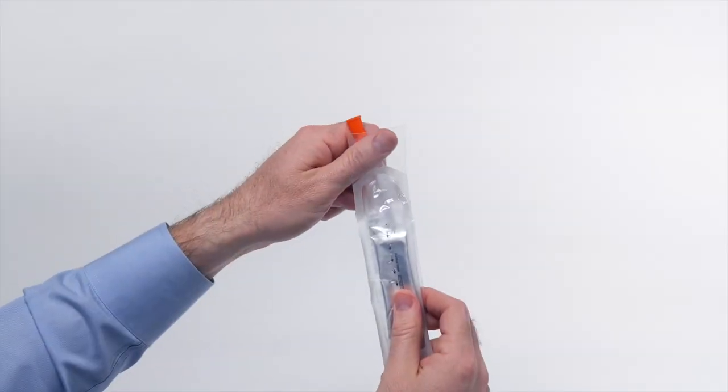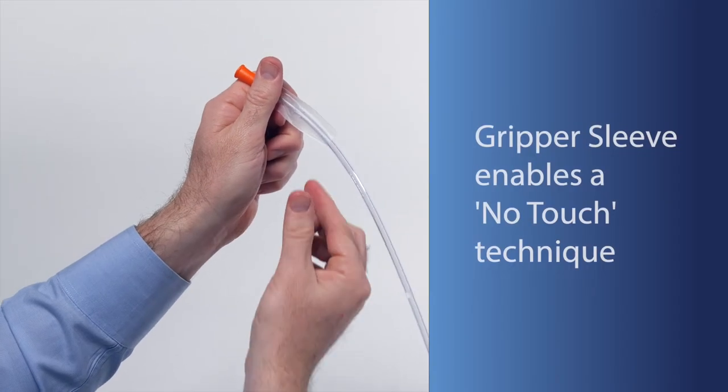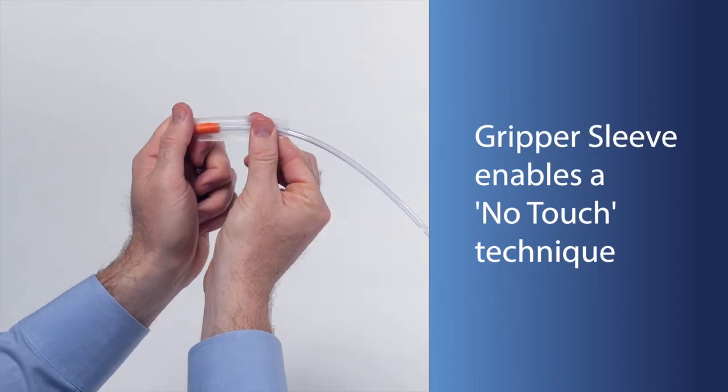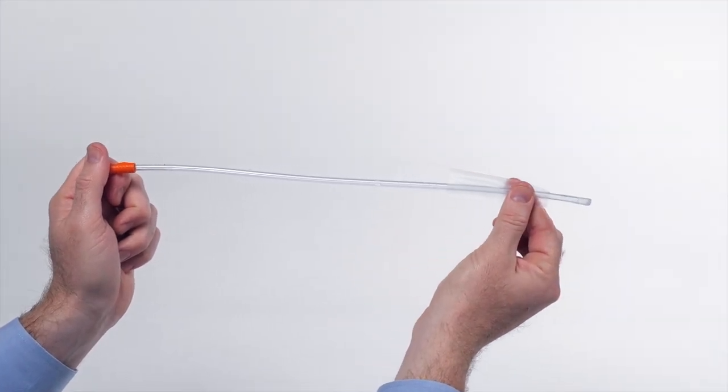With clean hands, remove the catheter from the package by the funnel end. A gripper sleeve prevents direct contact with the catheter for controlled, clean use and reduces risk of exposure to bacteria that can lead to infection.